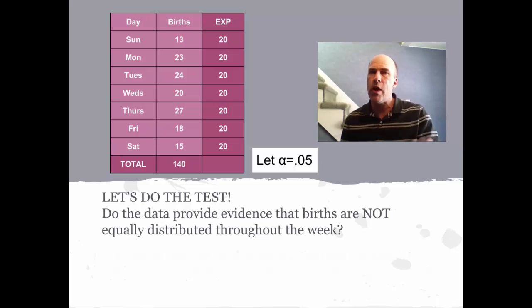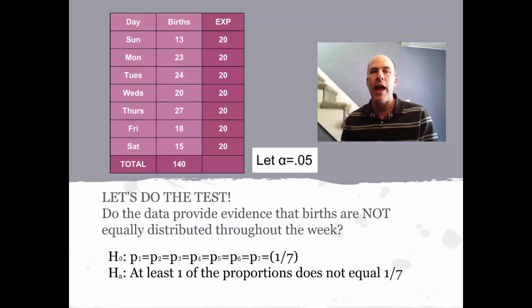We could use symbols if we wanted to. Here's the way you would write the null and alternate if you wanted to use symbols. The null would be that all of the proportions equal 1/7, versus the alternate that at least one does not equal 1/7. Either way is fine, using either symbols or narrative statements.